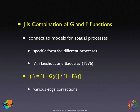Edge corrections are present in the G and the F function. There are no specific separate edge corrections in the J function — they are already carried out in the components. The J function itself is the ratio of the complement of each of these functions: in the numerator, the complement of the G function; in the denominator, the complement of the F function.